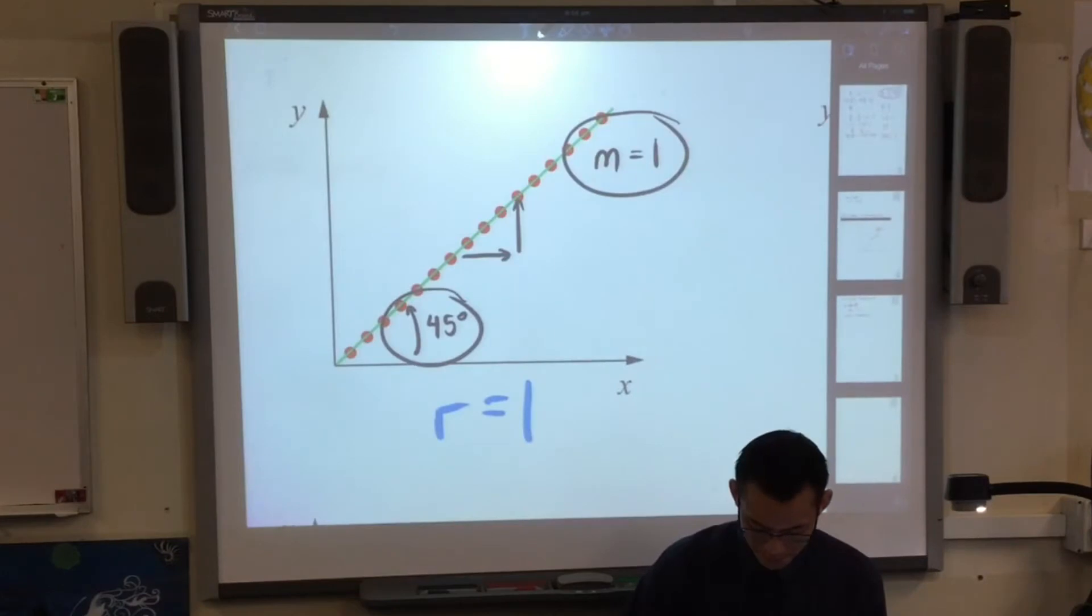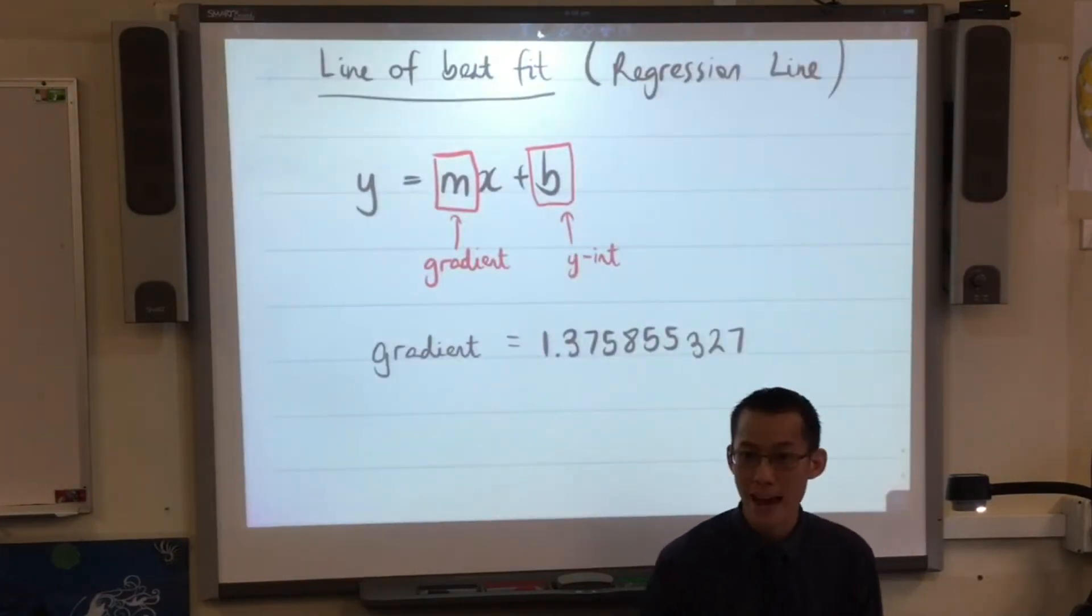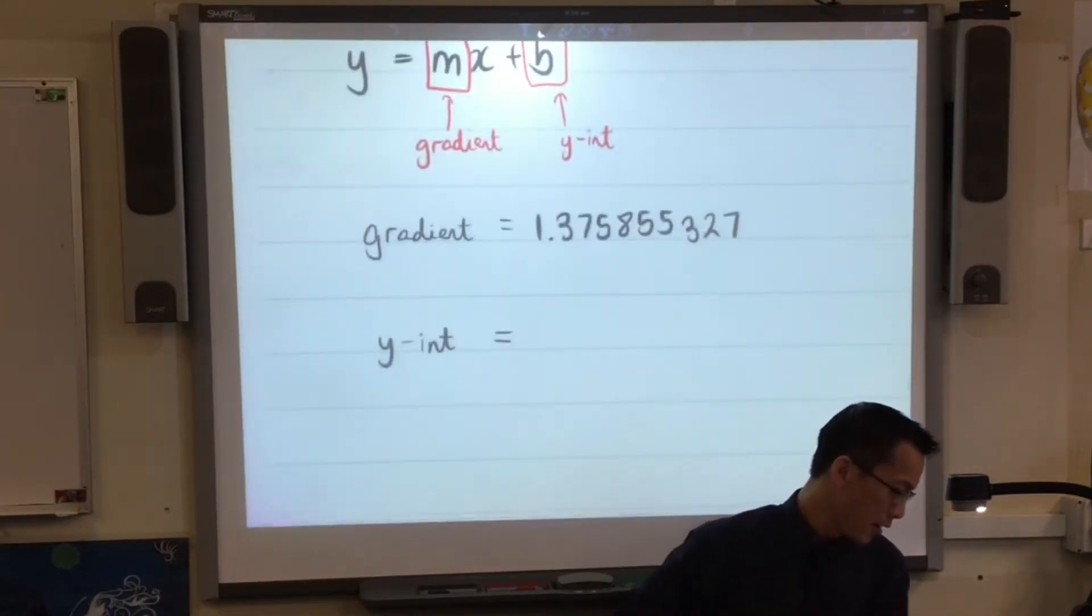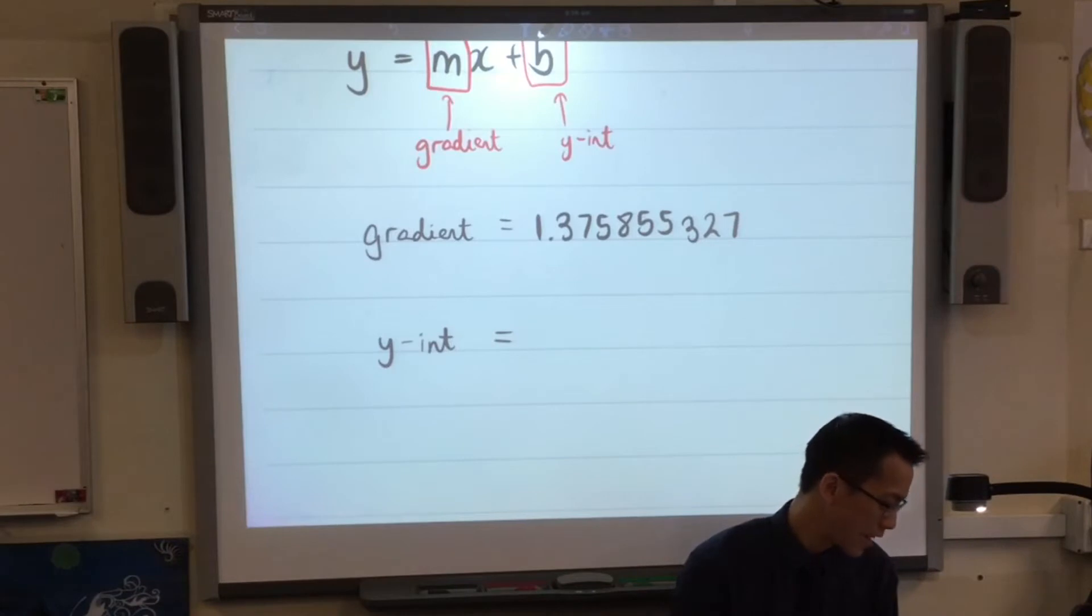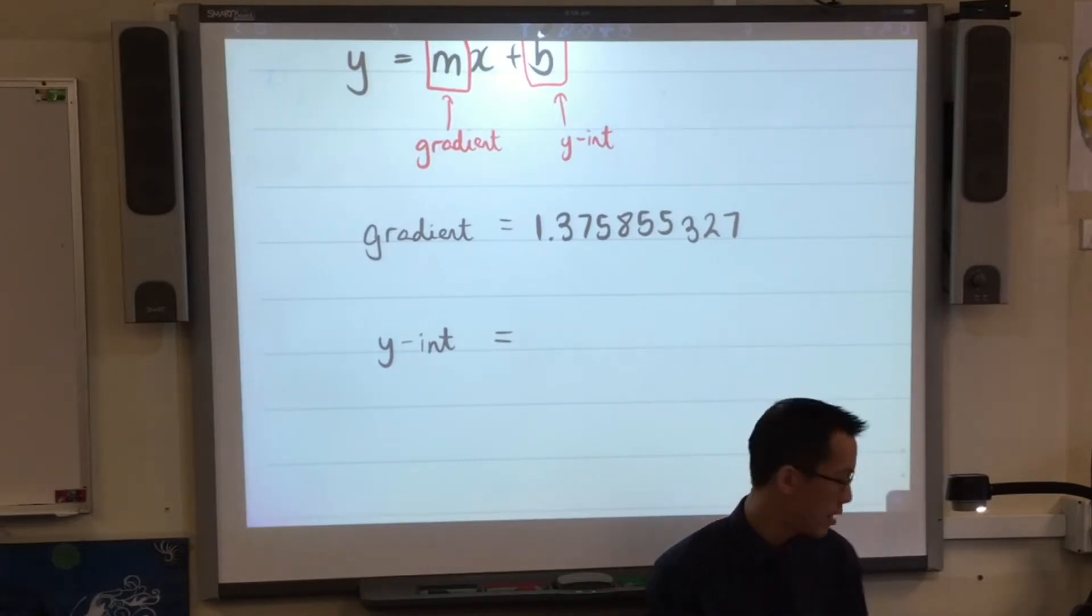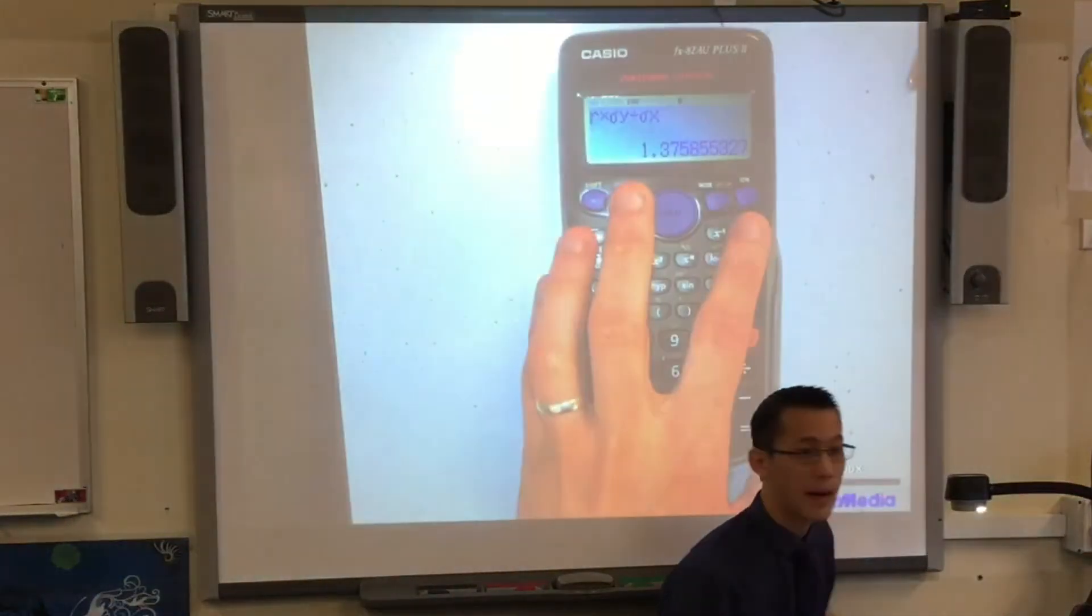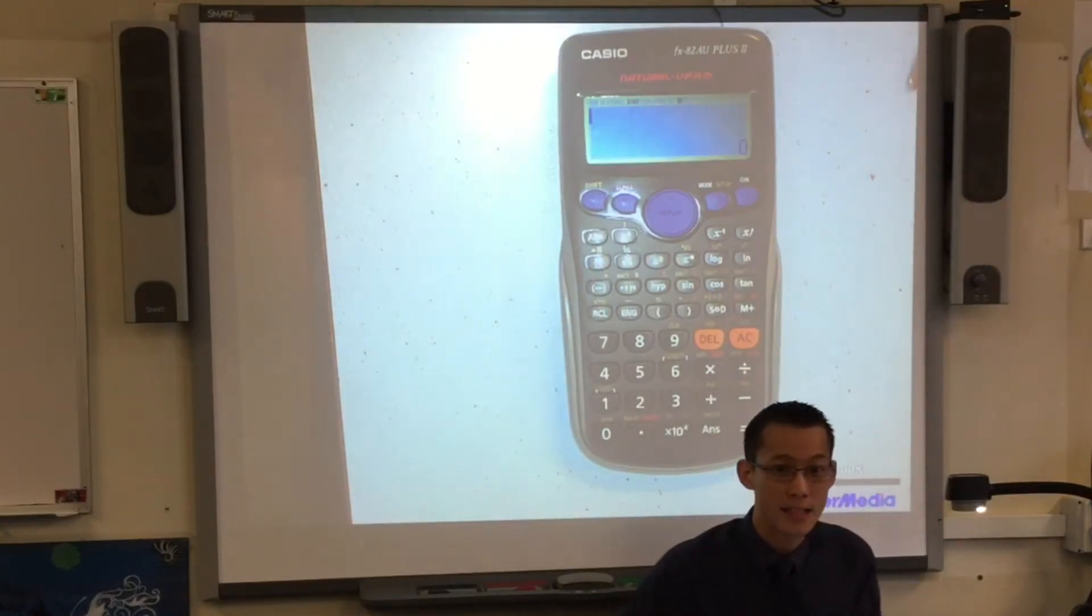Come back to the formula data sheet. On the formula data sheet, we've just worked out gradient, so now we're up to working out y-intercept. At this point, it says y bar, that's the mean of y, take away, and then you can see what's going on. So I'm going to go to my calculator now. I've still got my gradient on there. I'm going to clear that out. And now I'm going to work out how to get this y-intercept.